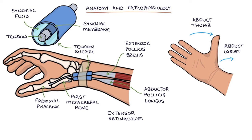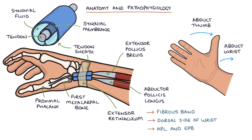There is a structure called the extensor retinaculum, which is a fibrous band that wraps across the back, or the dorsal side, of the wrist. The abductor pollicis longus and the extensor pollicis brevis pass underneath the extensor retinaculum. Repetitive movements of these tendons under the extensor retinaculum results in inflammation and swelling of the tendon sheaths.